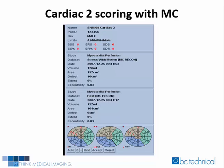Here is Cardiac II's motion corrected study quantitative scoring results. The summed stress score was 6, the summed rest score was 0, and the summed difference score was 6.